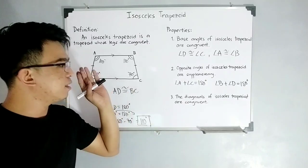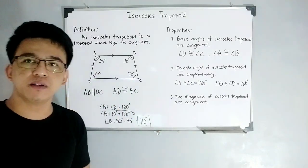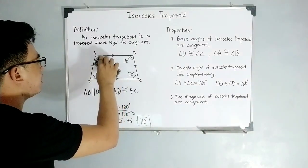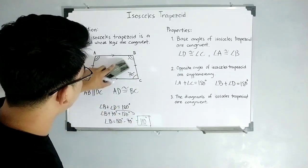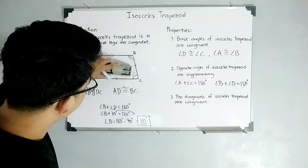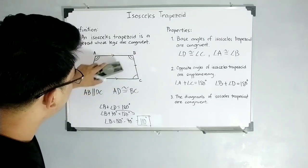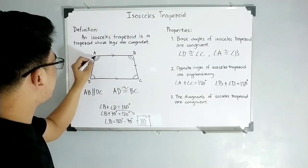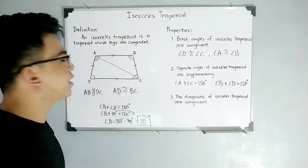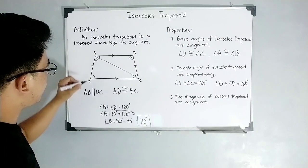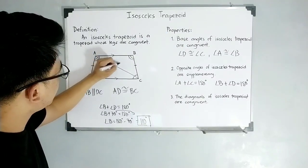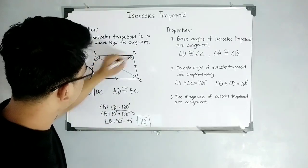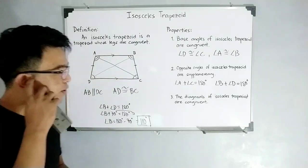So, let's move on with number 3. The diagonals of isosceles trapezoid are congruent. So, diagonals of isosceles trapezoid are congruent. So, I will be erasing this one. So for property number 3, let me draw a diagonal. Let's say, I will draw diagonal AC. Diagonal AC. And let me draw another diagonal, which is diagonal DB or BD. Since we have the property, the diagonals of isosceles trapezoid are congruent, we can have this statement that DB or diagonal DB is congruent or equal to diagonal AC.